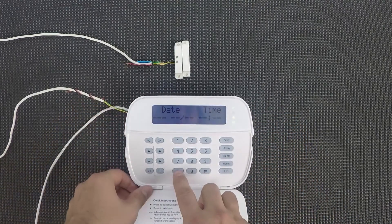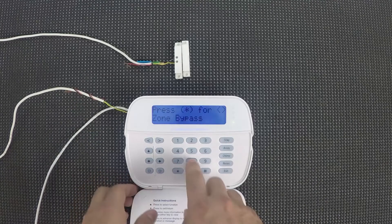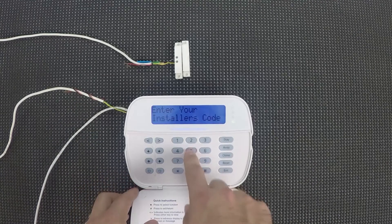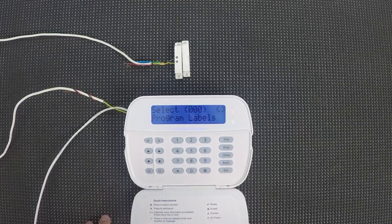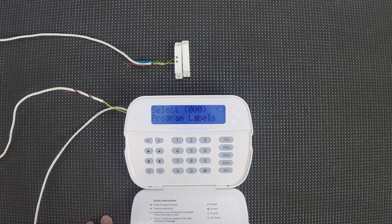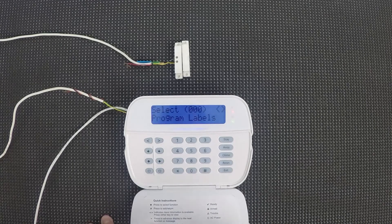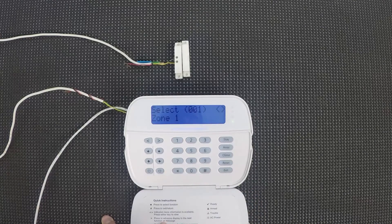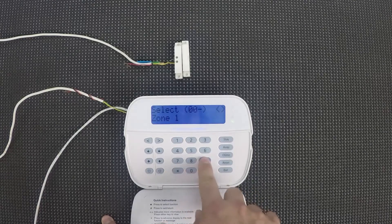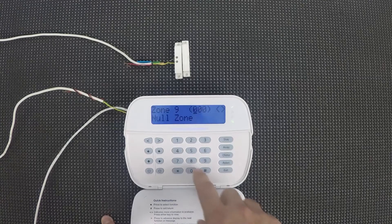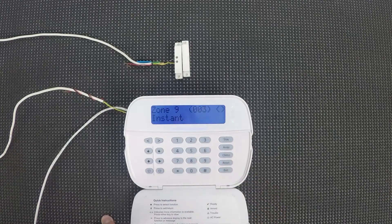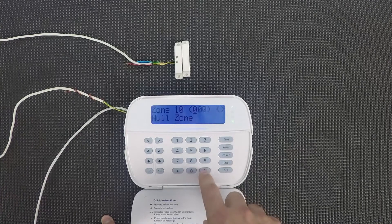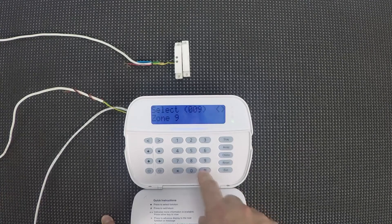The first thing we're gonna do is go into programming with star eight, followed by the installer code, and then we're going to go through our basic zone programming. So we'll start out with 001, this is our zone definitions, and we'll go to zone nine, and we're gonna program this as 003, which is our instant zone type.